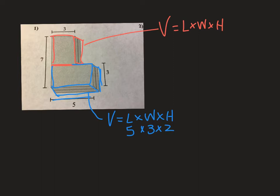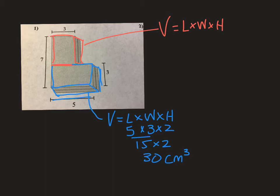There's my length, my width, and my height: 5 times 3 is 15, and 15 times 2 is 30. Our worksheet tells us these are measured in centimeters, so this will be cubic centimeters. We need that little superscript 3 as our unit label to show that this is a three-dimensional measurement.